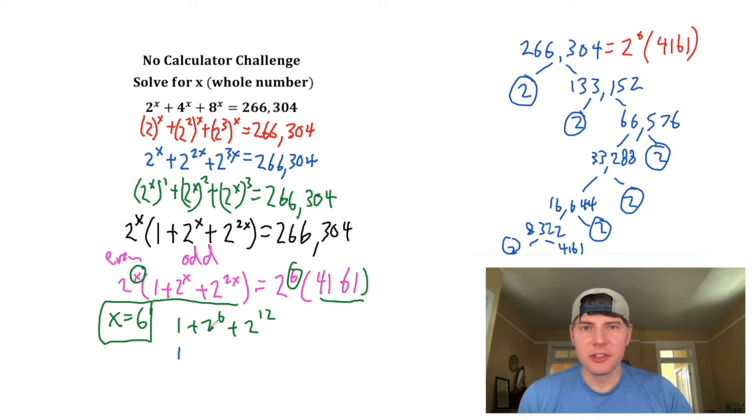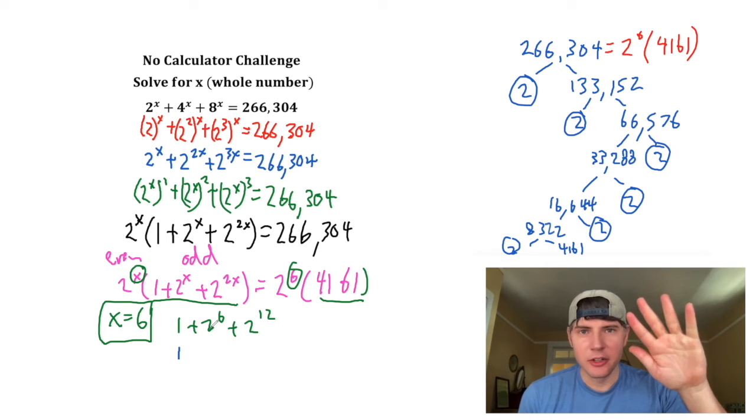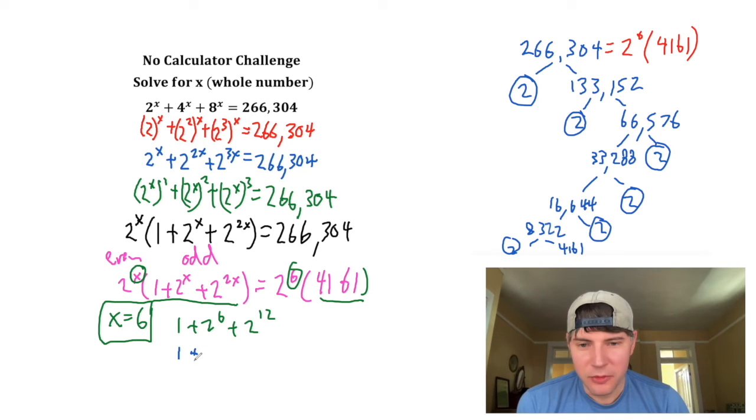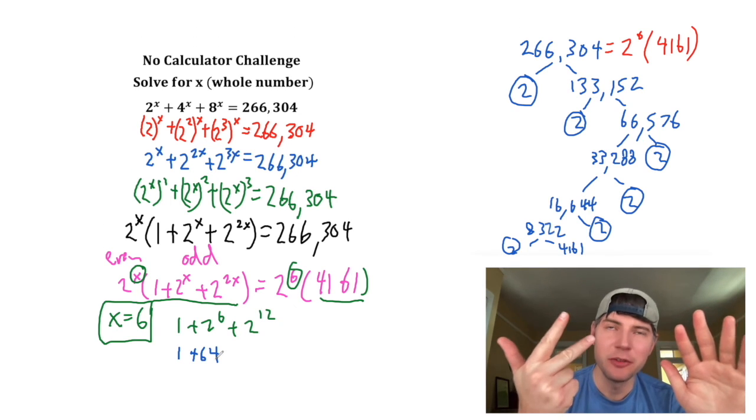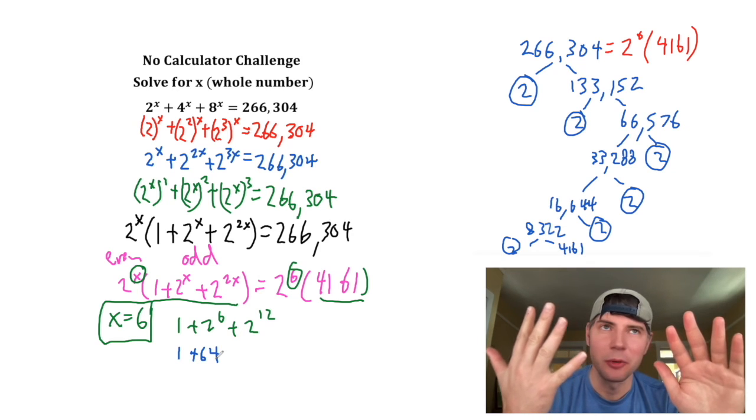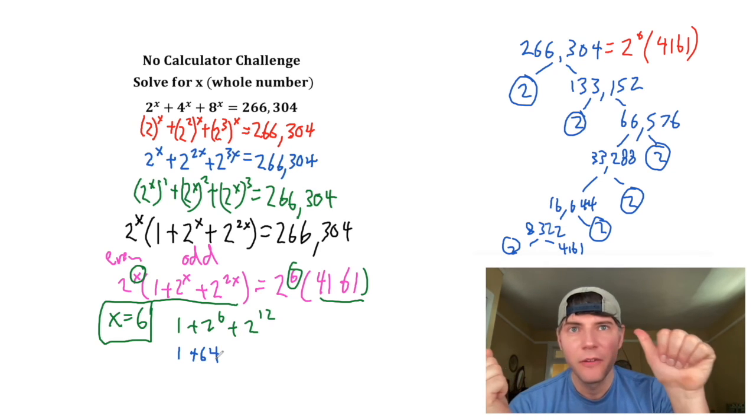So 1 is just 1. 2 to the 6 is 2, 4, 8, 16, 32, 64. And then 2 to the 12th would be 2, 4, 8, 16, 32, 64, 128, 256, 512, 1024, 2048, 4096.